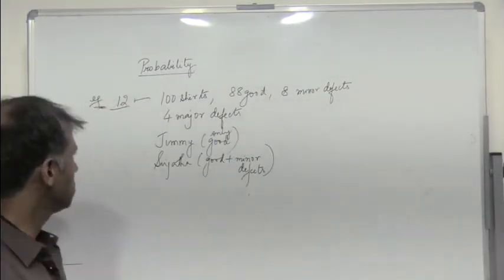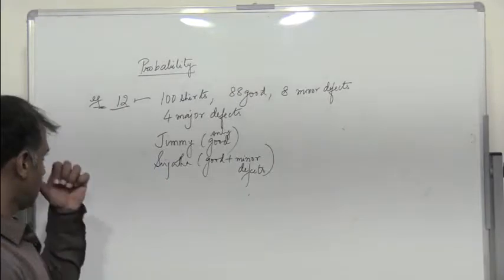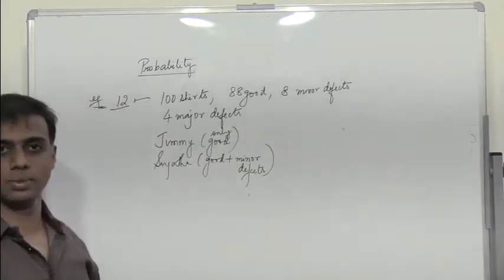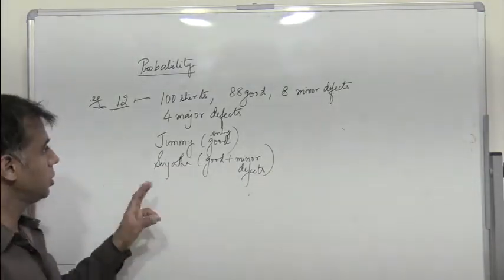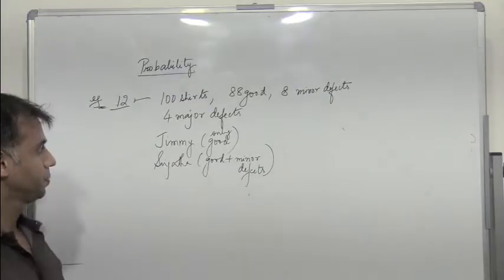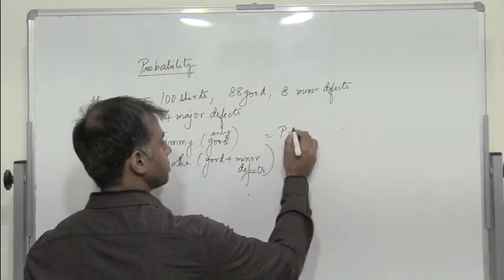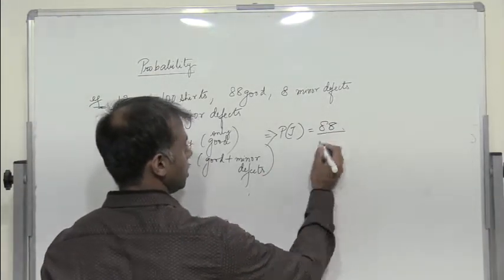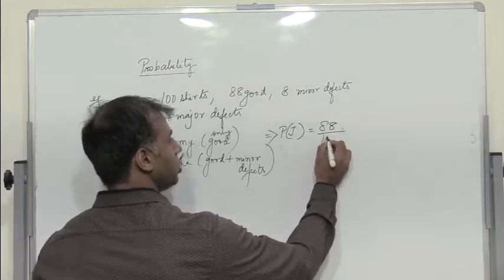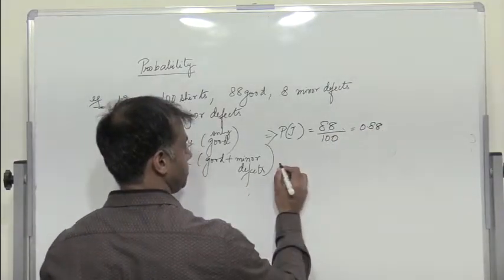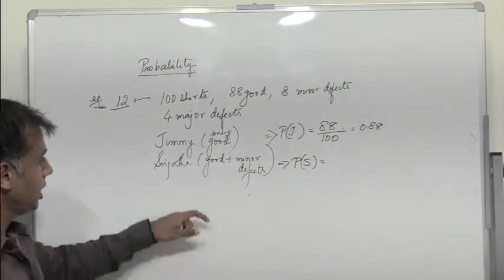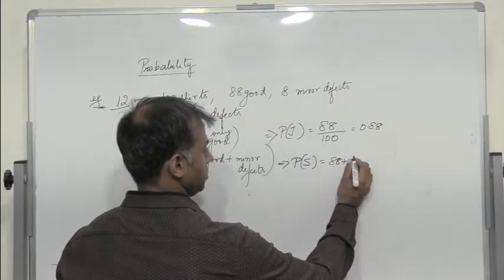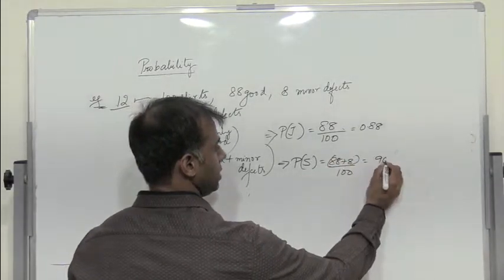Example 12: There are 100 shirts. Among these, 88 shirts are good, 8 shirts have minor defects, and 4 shirts have major defects. Jimmy will only buy shirts with no defects — so probability for Jimmy is 88 by 100, which is 0.88. Sujata will accept good shirts as well as shirts having minor defects, so it is 88 plus 8 by 100, which is 96 by 100, which is 0.96.